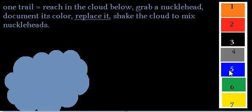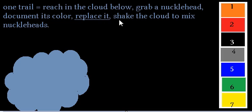These are knuckleheads. There are seven of them and they are all in this cloud. For this probability problem, one trial is defined as: reach into the cloud, grab a knucklehead, document its color, replace it, and shake the cloud to mix the knuckleheads. That's what one trial means.